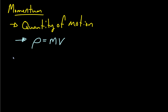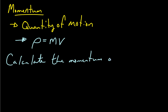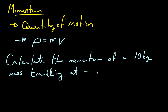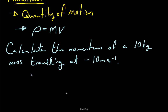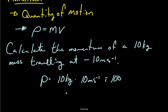So very simply, if we want to calculate an object's momentum, we do a little multiplication. If I said calculate the momentum of a 10 kilogram mass traveling at negative 10 meters per second — the negative means direction, so on a number line positive is right and negative means traveling left — you get 100 units of momentum. There's no specific unit; it just keeps the units that went into it, so it's kilogram meters per second.